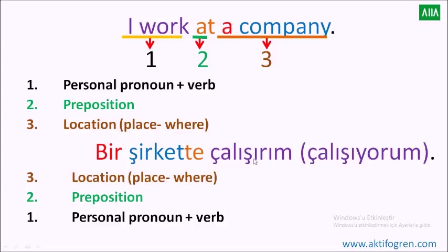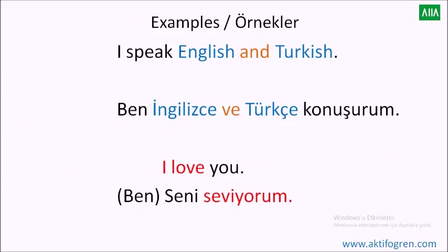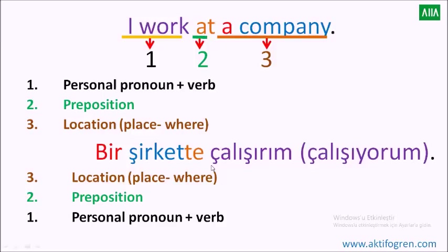Depending on the tense, we use a suffix like '-ırım.' The last part shows the person who does this. So guys, I hope it's clear: the word order is 1-2-3 in English but 3-2-1 in Turkish — quite different. Just bear in mind: in Turkish we use action verbs at the end of sentences. Alright, let's look at the next sentences.